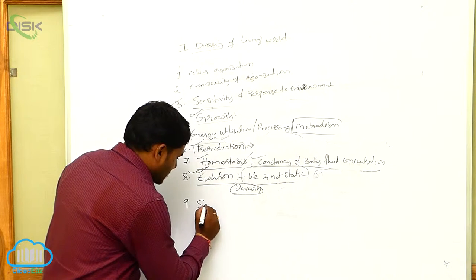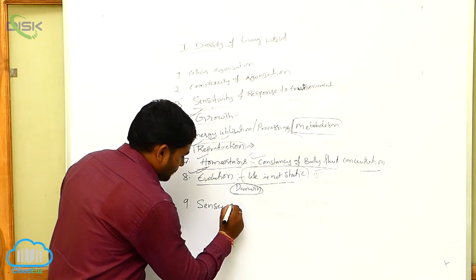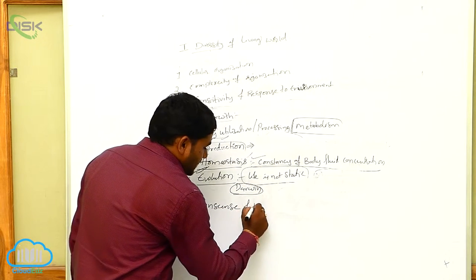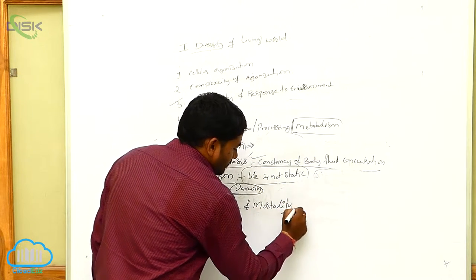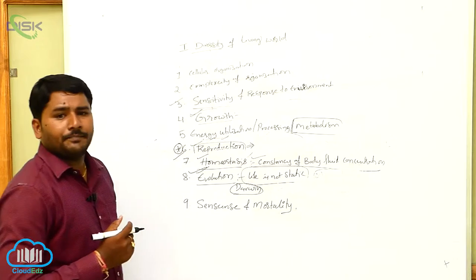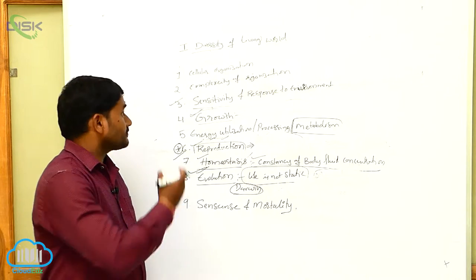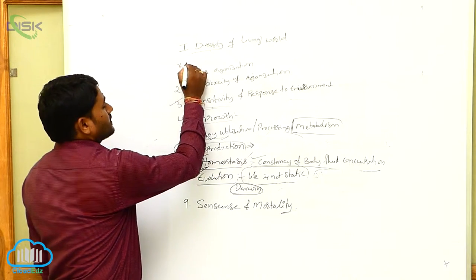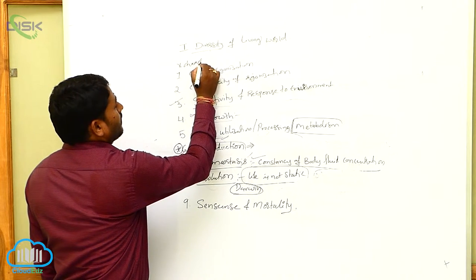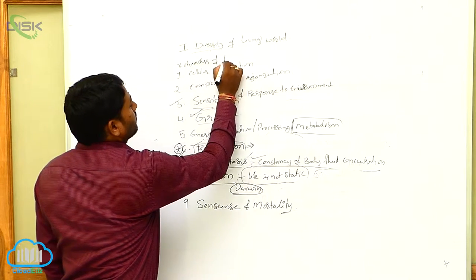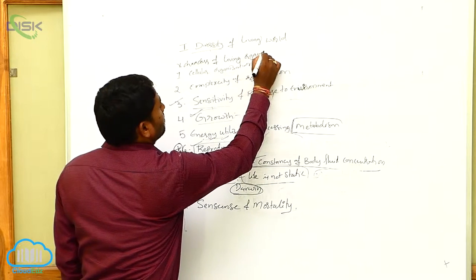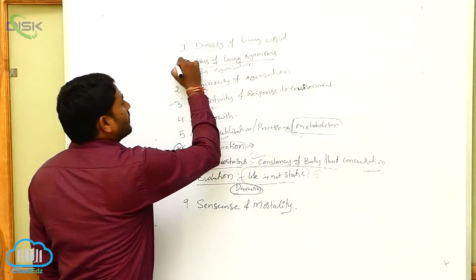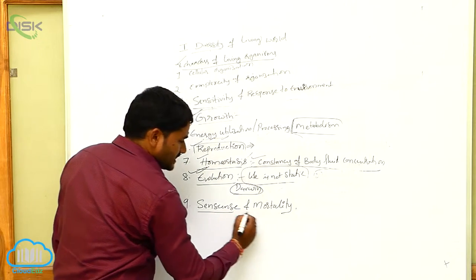So next one is senescence and mortality. This is another character of living organisms. For example, these are all characters of living organisms. So here, senescence and mortality.